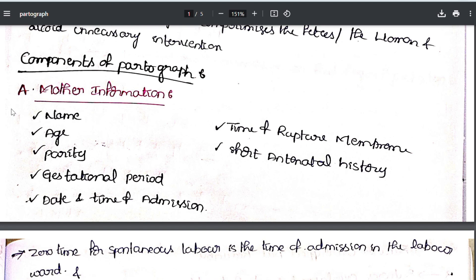Components of partograph. First is mother information. Every partograph records the mother's name, age, and parity — the number of children she already has. The gestational period at which she is admitted to the delivery room is also recorded. 37 weeks is a safe period. Before 37 weeks is preterm labor, and after 37 weeks (38, 39, 40 weeks) she is post-mature, which is abnormal.